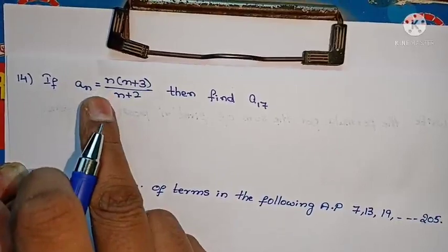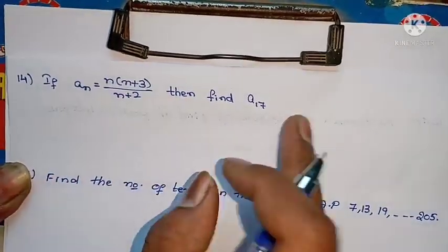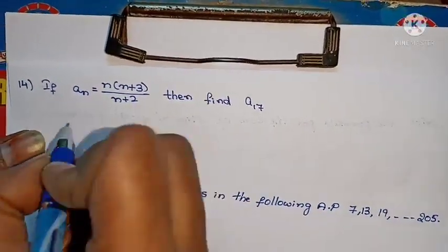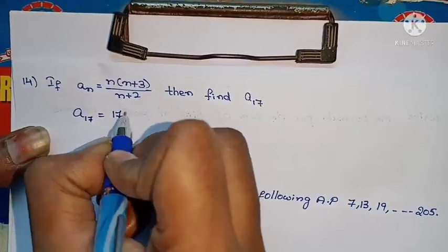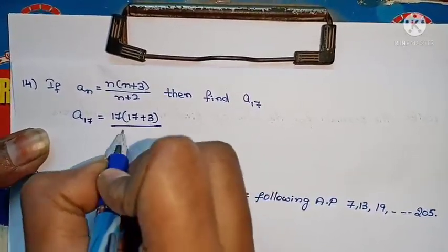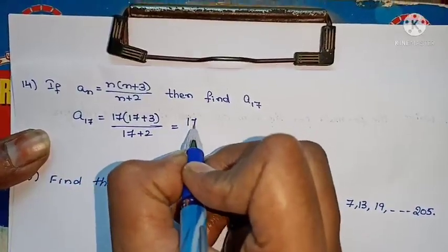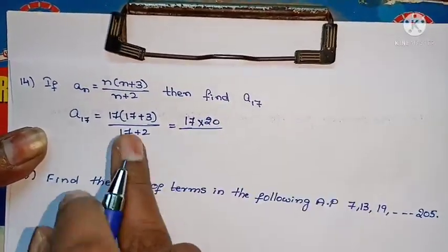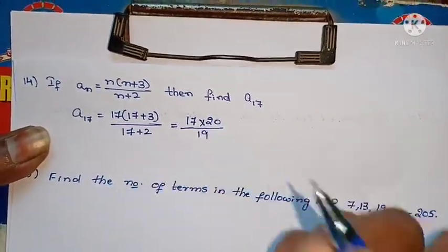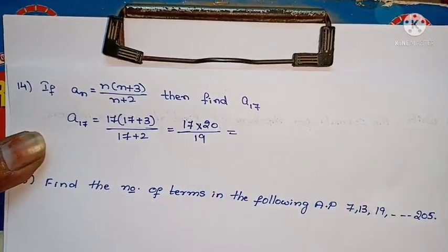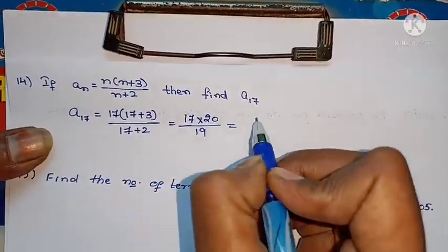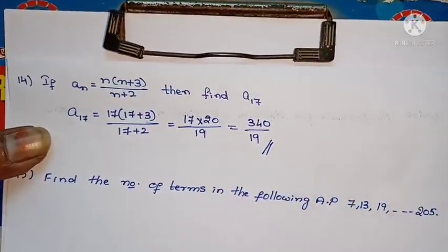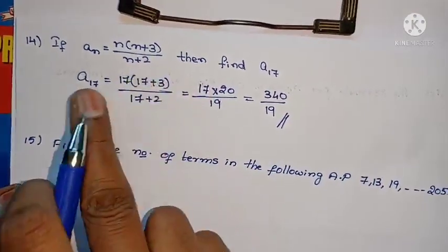Next problem: If An equals n(n+3)/(n+2), find the value of a17. Just substitute n equals 17: a17 equals 17 times (17+3) divided by (17+2) equals 17 times 20 by 19, which equals 340 by 19.